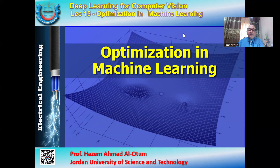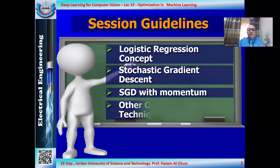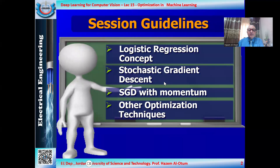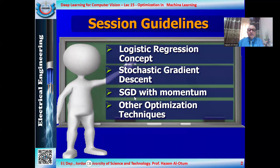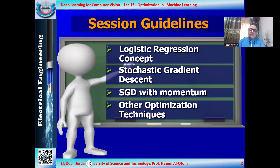There's a long list of optimization applications you can find on the internet. However, we'll concentrate on specific algorithms. We'll talk about logistic regression concepts, stochastic gradient descent (SGD), SGD with momentum (SGDM), and we'll also discuss some other optimization techniques.